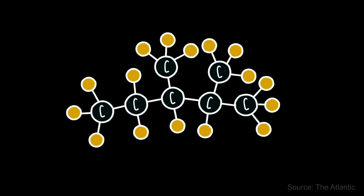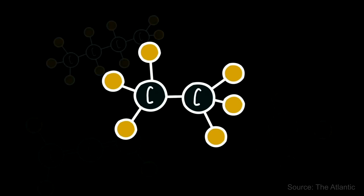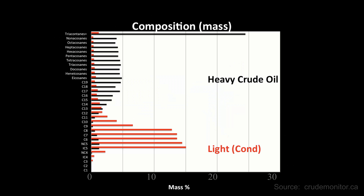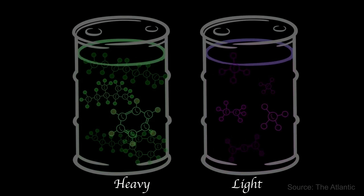Hydrocarbons are chemical compounds made mainly of carbons and hydrogens. This chart shows in black a heavy crude oil and in red a light hydrocarbon. Each hydrocarbon has different components from C1 to C30 and others. If we associate molecular mass with size, heavy components like C20s will be bigger than light components like C1s. There will be some shrinkage because small molecules fill the gaps between the largest and the medium ones.